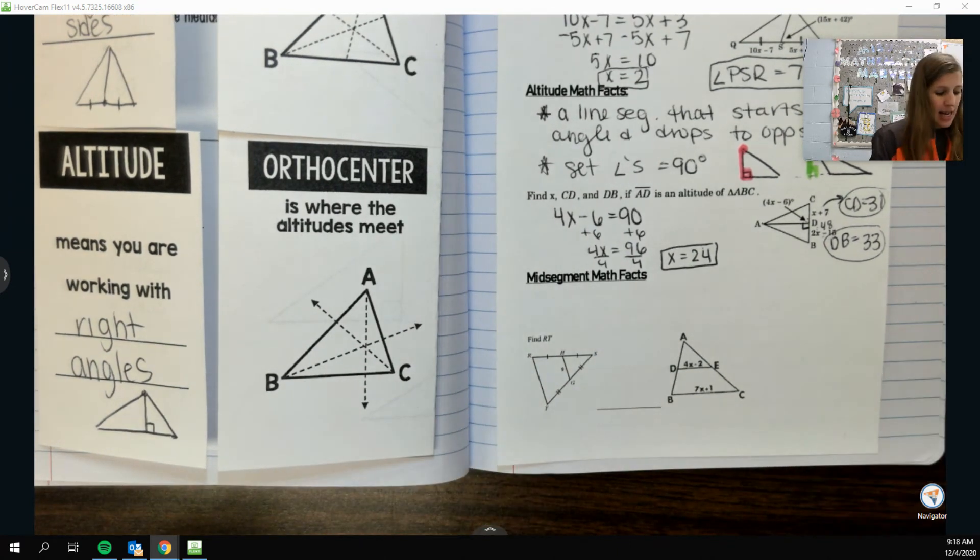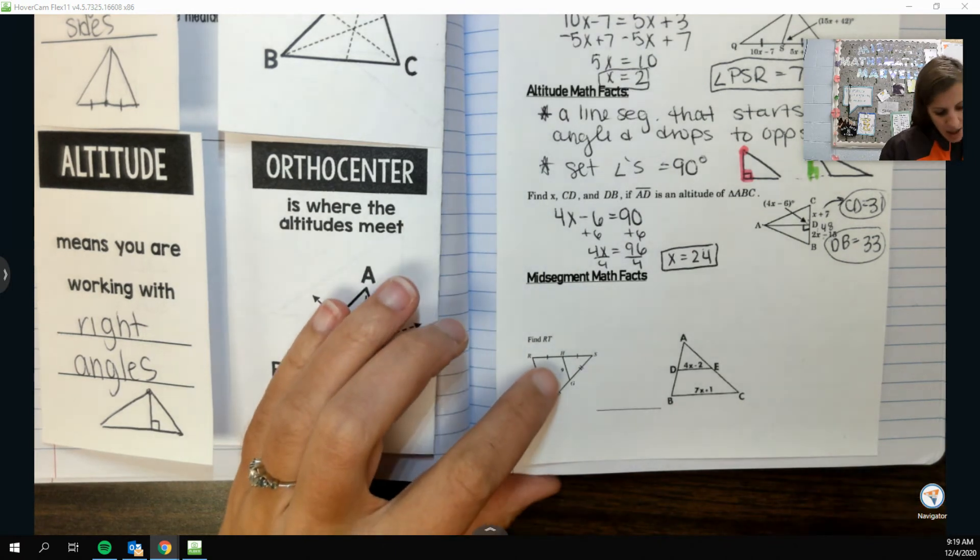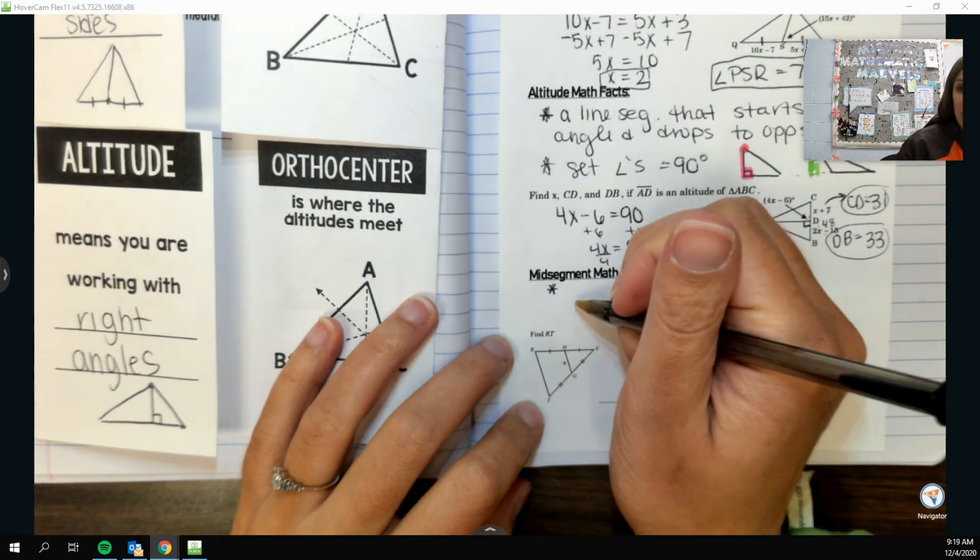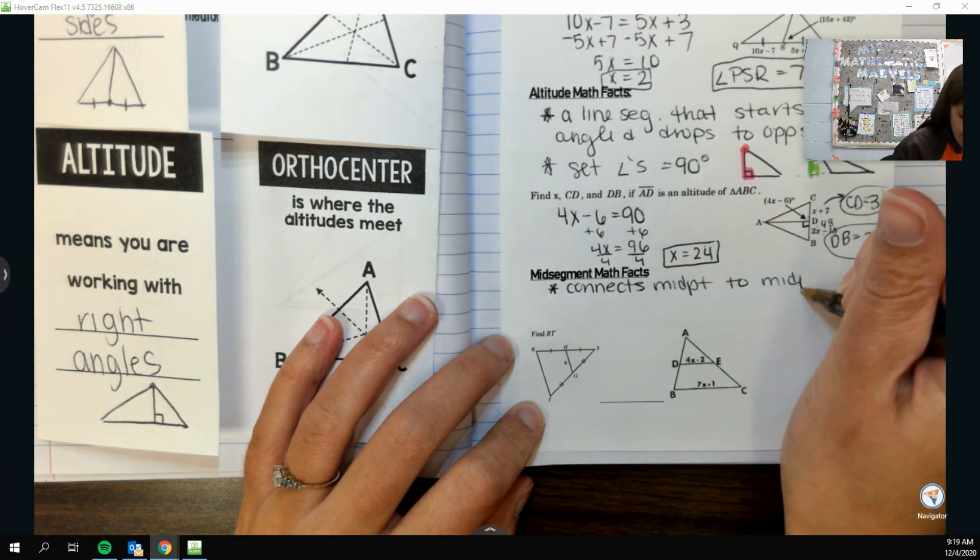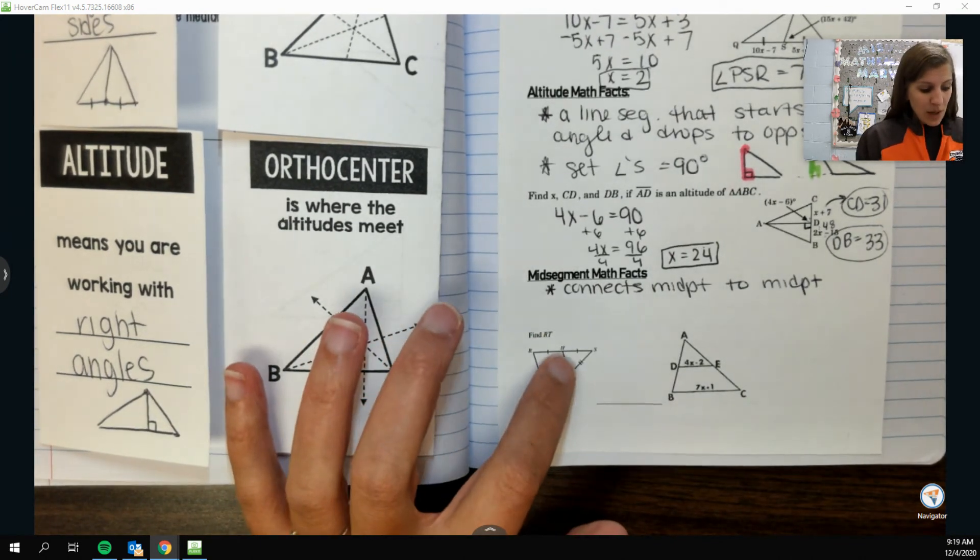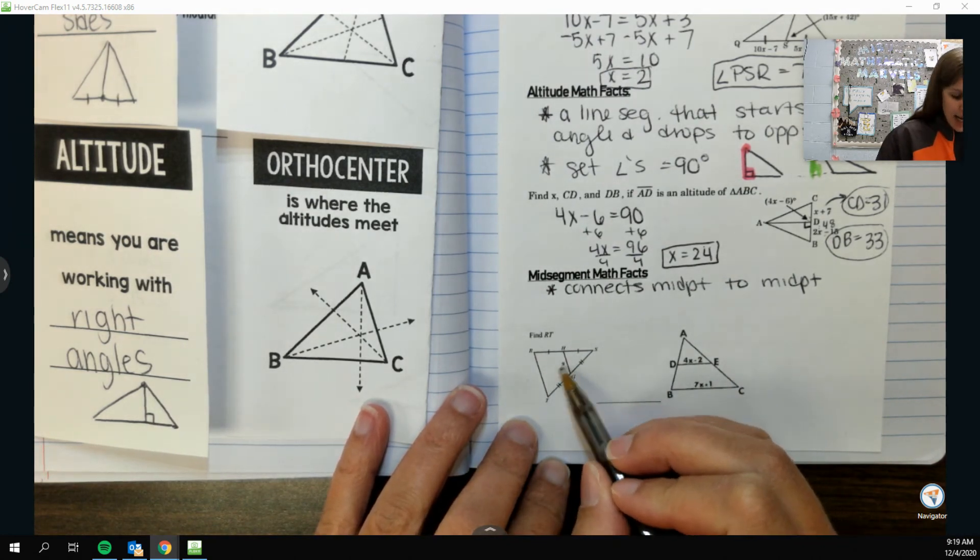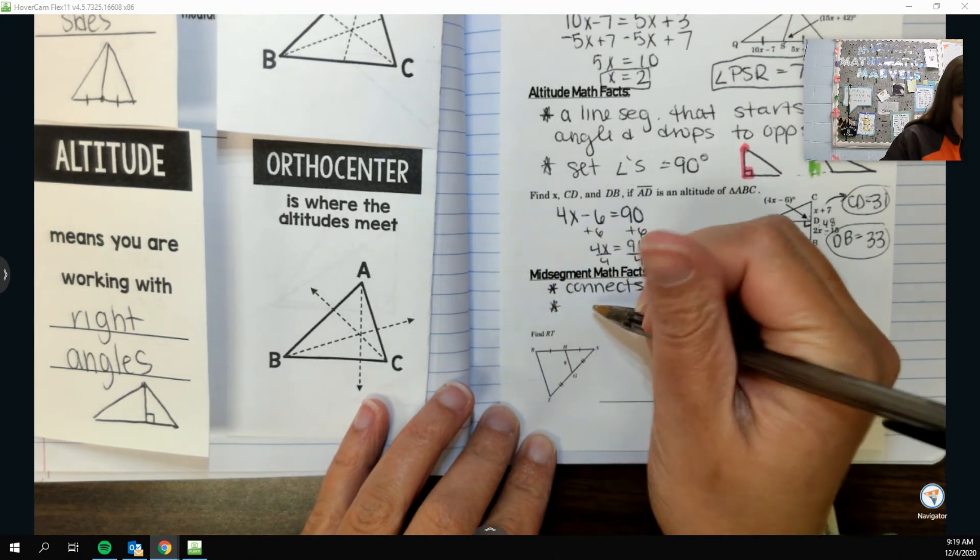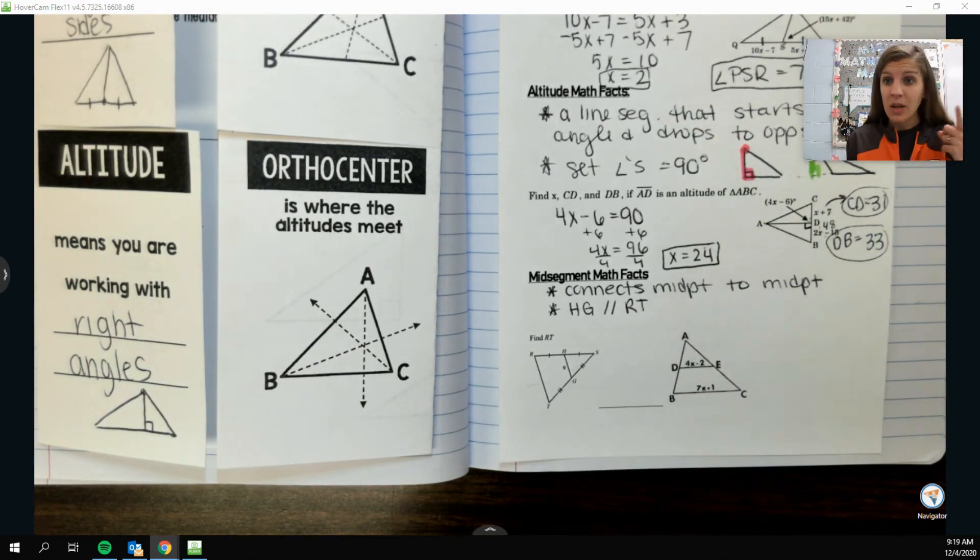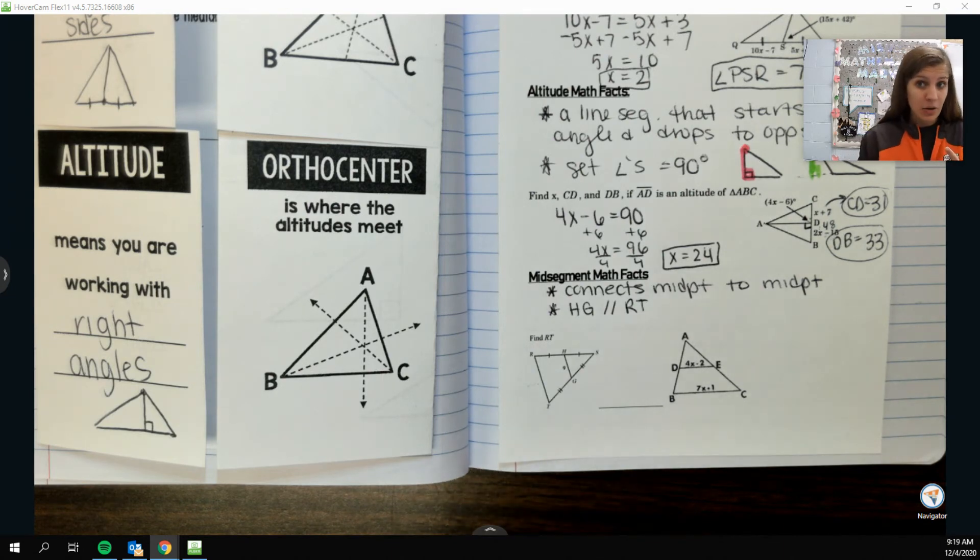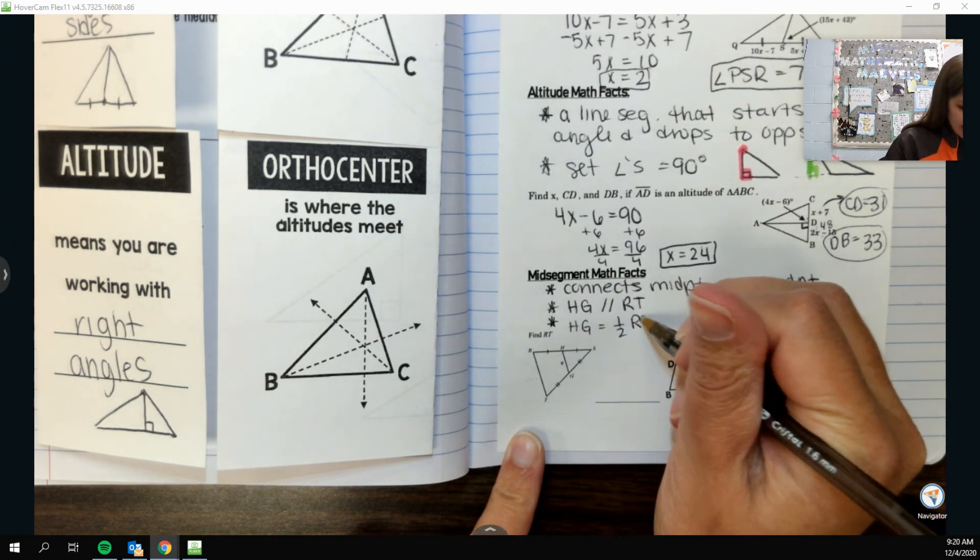Now the last guy that we have, our mid segment. Now what a mid segment does, if we take a look at our pictures here, what a mid segment will always do is it will connect a midpoint to a midpoint. So I need to find midpoints of two sides. So it connects midpoint to midpoint. So it is a line segment. And when you do that, what happens is the two sides opposite of each other, because like this mid segment now that you've drawn and the side opposite of it will be parallel. So like using this picture right here, I'll be able to say that HG is parallel to RT. And that's useful because I can get some of those alternate interior or corresponding pairs to be congruent. Also what's true is that HG is half of RT.